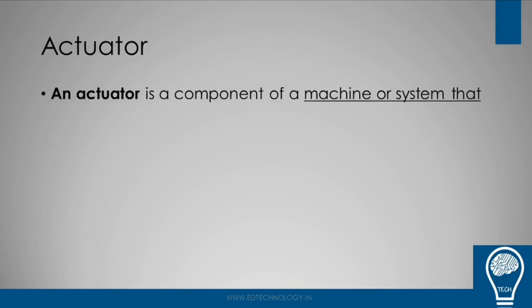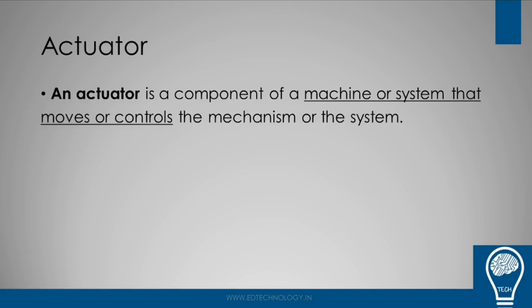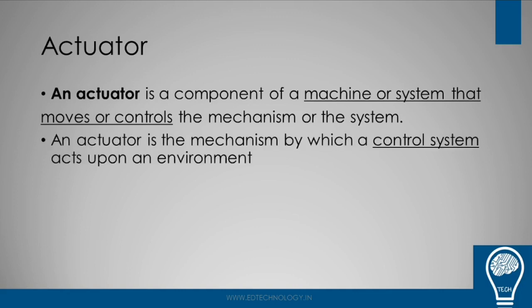An actuator is a component of a machine or a system that moves or controls the mechanism or the system. This is different from sensors because sensors read the ambient changes and sense the trigger mechanism to either actuators or to the processing units, whereas actuators get the data from the sensors and act according to that. An actuator is a mechanism by which a control system acts upon an environment.